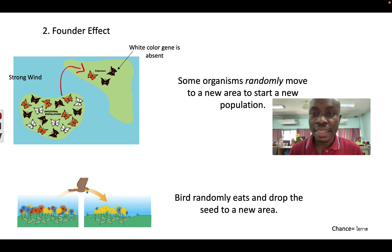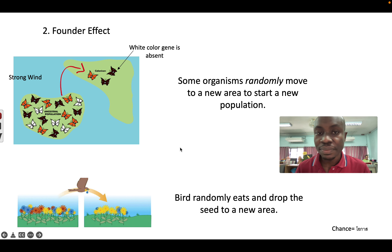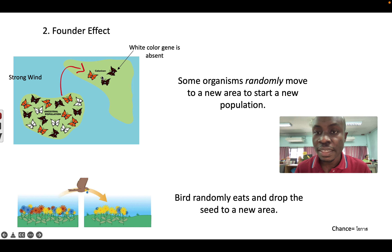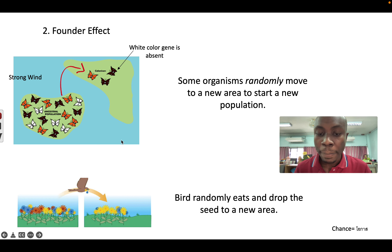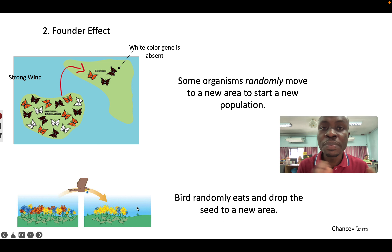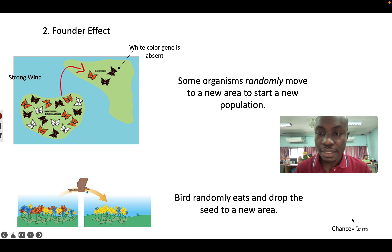Number two is the founder effect. Let's say we have a butterfly population on one island, and some of them are moved randomly to a new island. We can see that those on the new island look different from the original population. They move randomly — sometimes by strong wind. Another example is when a bird eats a seed and drops it in a new place, and you get a different population from the original. This is the founder effect — they move by chance.